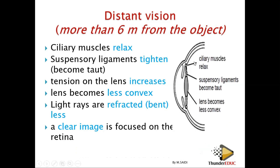When the ciliary muscles relax, the suspensory ligaments pull on both sides and the lens becomes small and less convex. Its refracting power is less, so light rays are not bent as much as for a near object. When viewing a far object, you see it as small because the light rays come as a very narrow beam, and a clear image is focused on the retina.